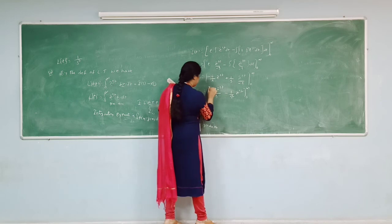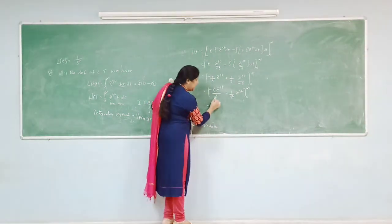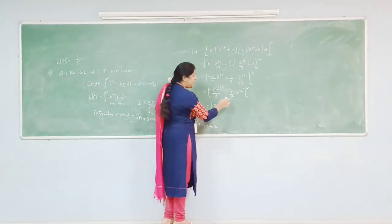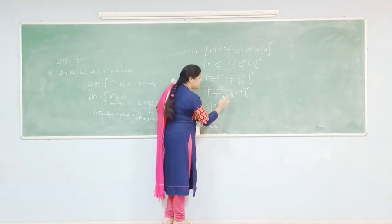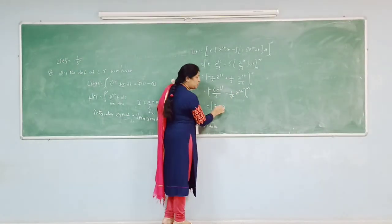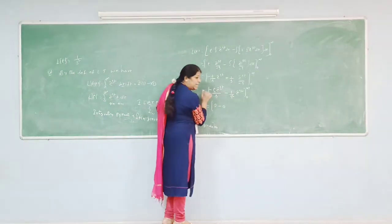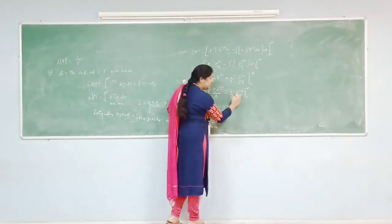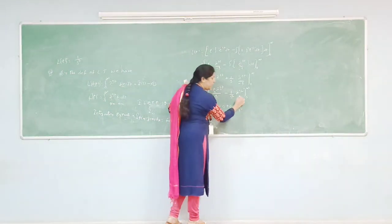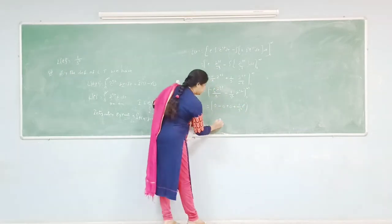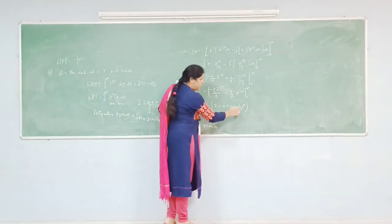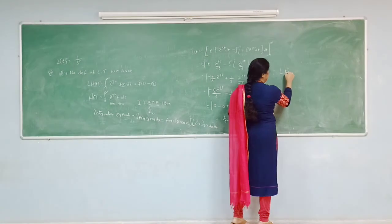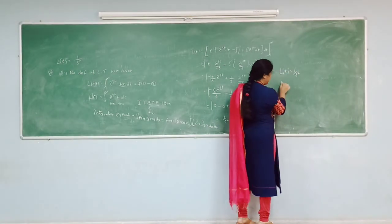Substituting the upper limit t→∞: e^(−st) → 0, so both terms vanish. Substituting the lower limit t = 0: the first term gives 0, and the second term gives (1/s²)·e^0 = 1/s². So the result is 0 − 0 + 0 + 1/s² = 1/s². Therefore, L{t} = 1/s².